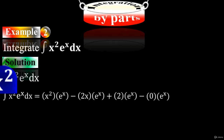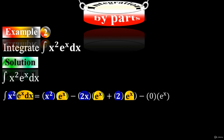In technique number two, leave x squared as it is. The integral of the second term e to the x is e to the x, minus the derivative of x squared which is 2x, times the integral of e to the x which is e to the x, plus the derivative of 2x which is 2, times the integral of e to the x. Then the derivative of 2 is 0, times the integral of e to the x. We stop here because we got 0 for the derivative term — the moment you get 0, you stop.